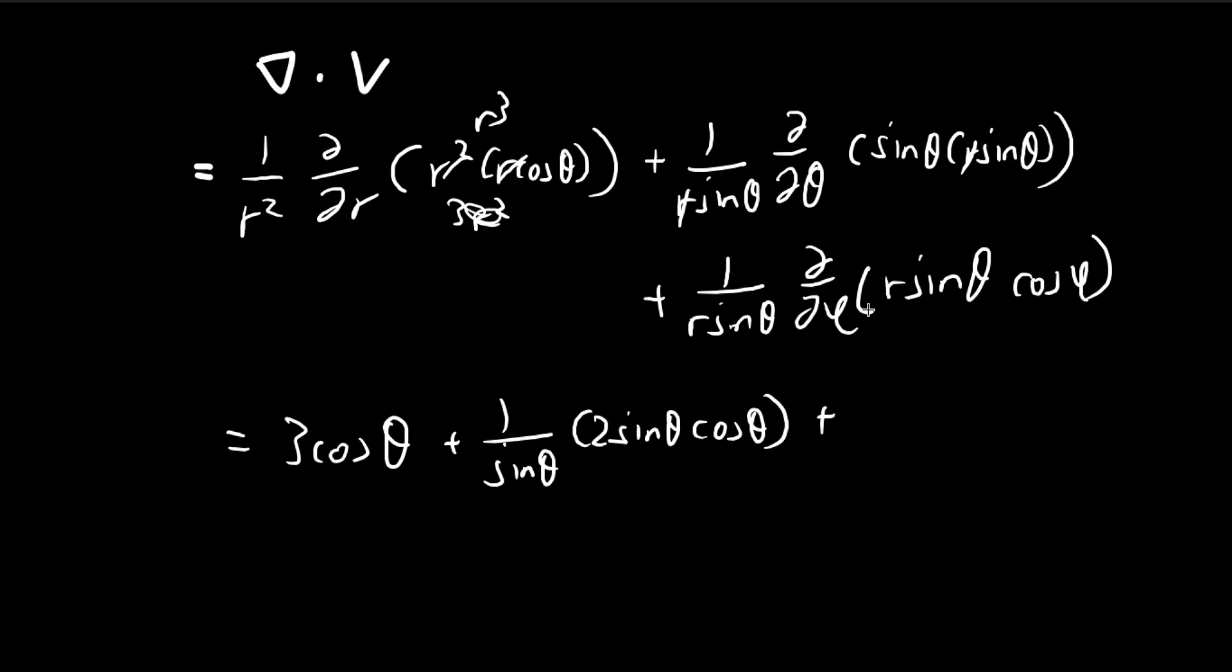And then for here, this is with respect to phi, so I can just pull this out and then cancel it out. So we differentiate cosine phi with respect to phi. So we get negative sine phi. So canceling we get 5 cosine theta minus sine phi. So this is the divergence.